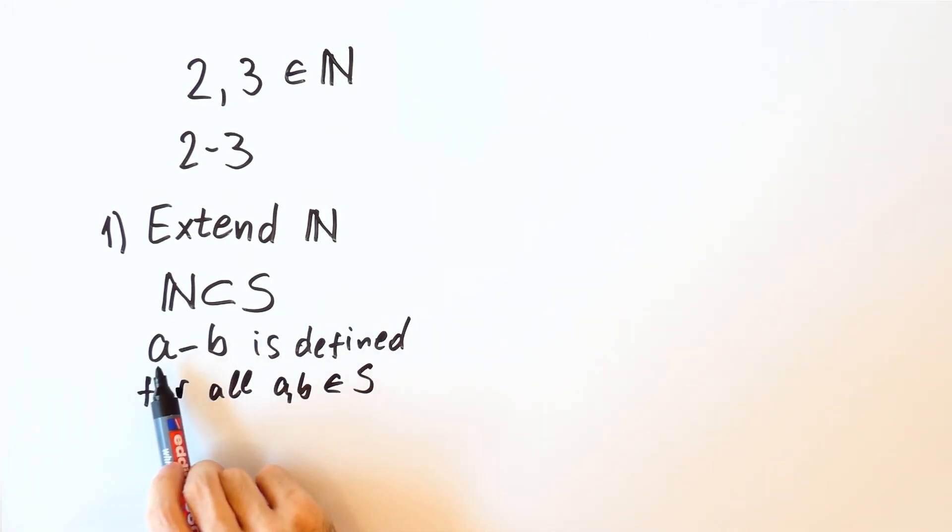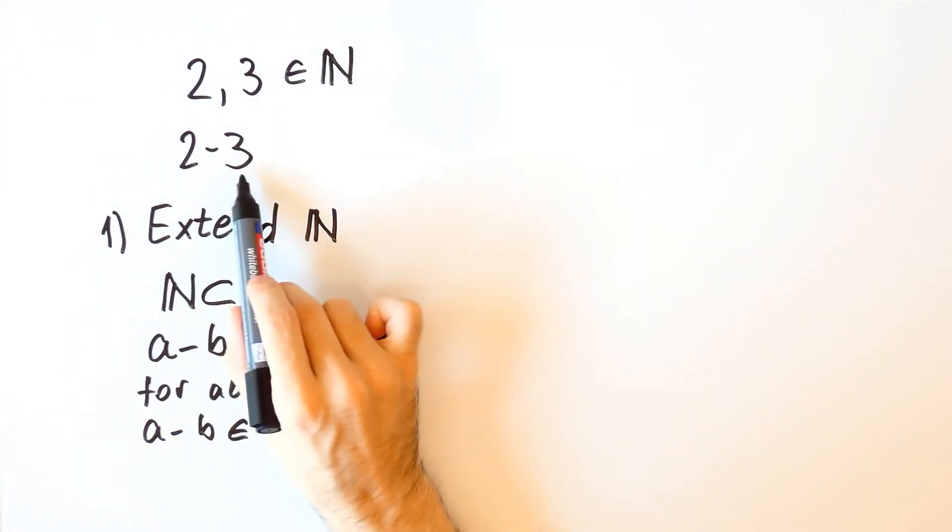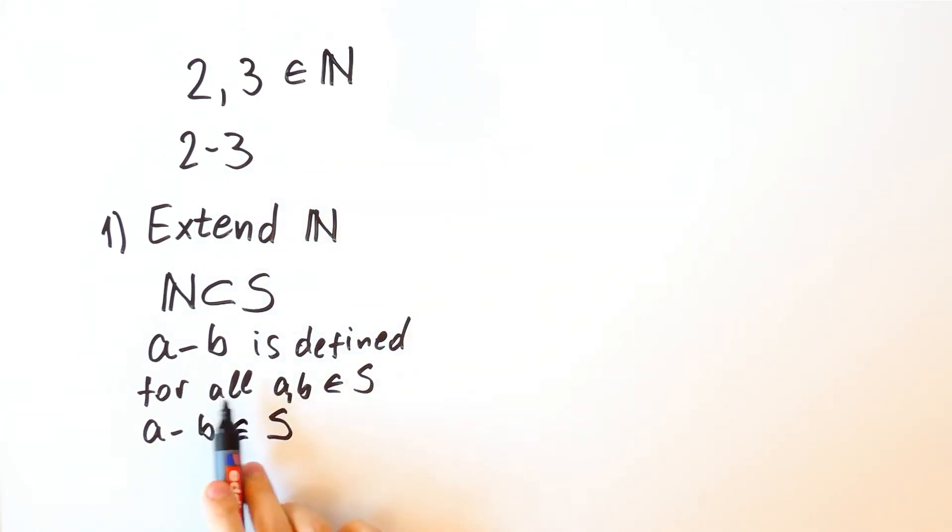And, of course, this difference also should be in this set. And, in particular, 2 minus 3 will also be defined and will be in this set, but it won't be a natural number.